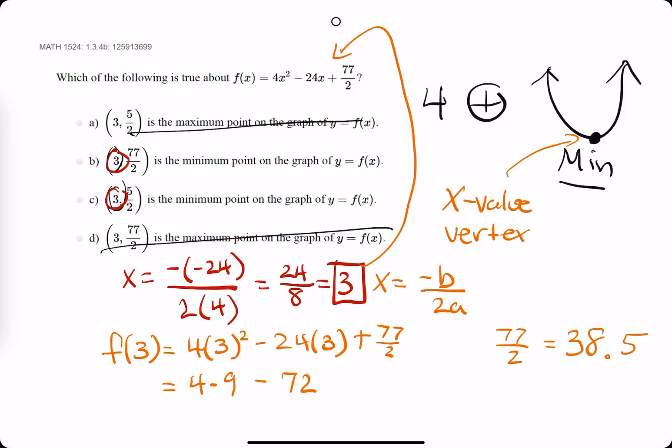And we get 36 minus 72 plus 38.5 equals, 36 minus 72 is -36 plus 38.5 should give us about 2.5, which also is equal to 5 divided by 2.